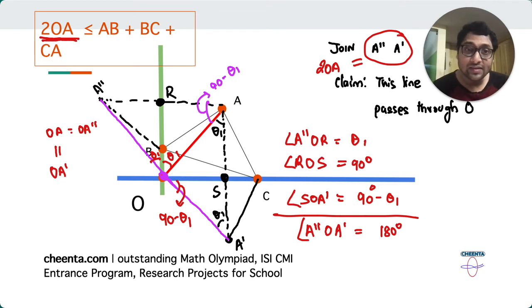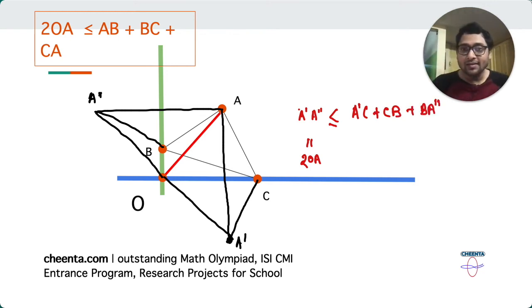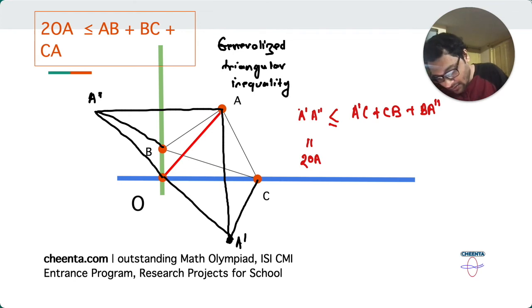So what is the last thing? What is the last piece of the puzzle? Notice that A' A'' is less than or equal to A' A'', which is twice of OA. This is less than or equal to A' C C B B A''. Right? Because this is like the quadrilateral version of the triangular inequality. It's like generalized triangular inequality.